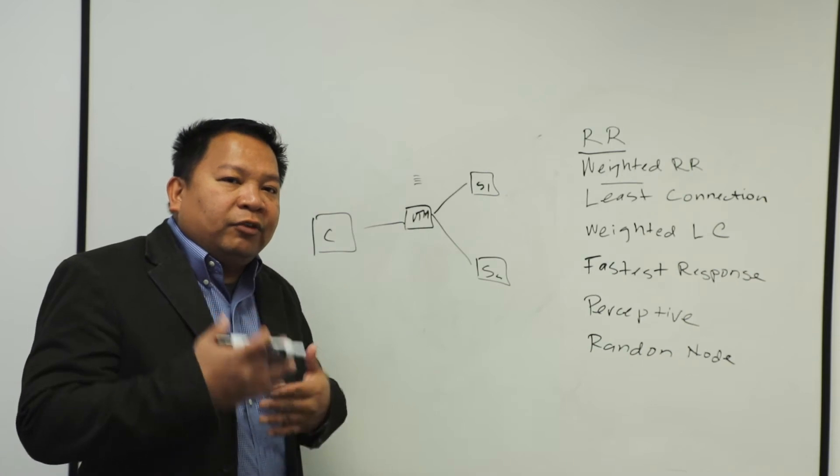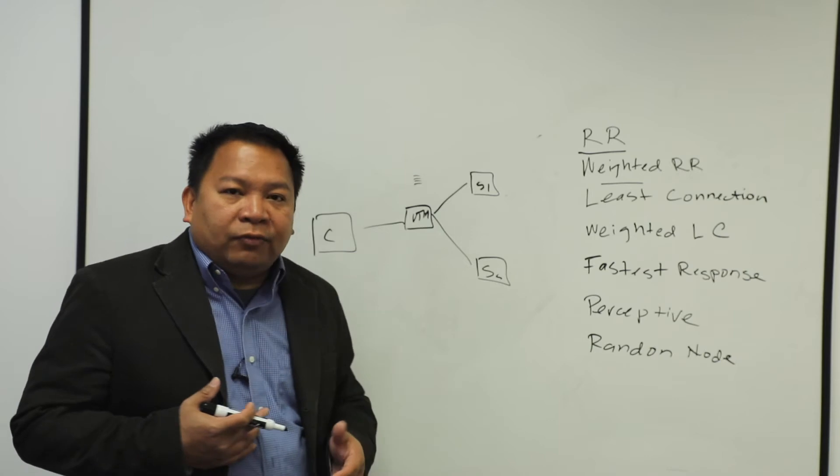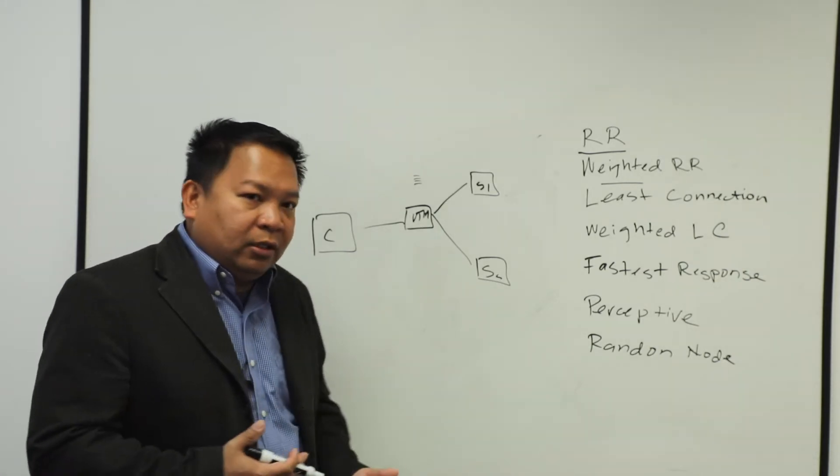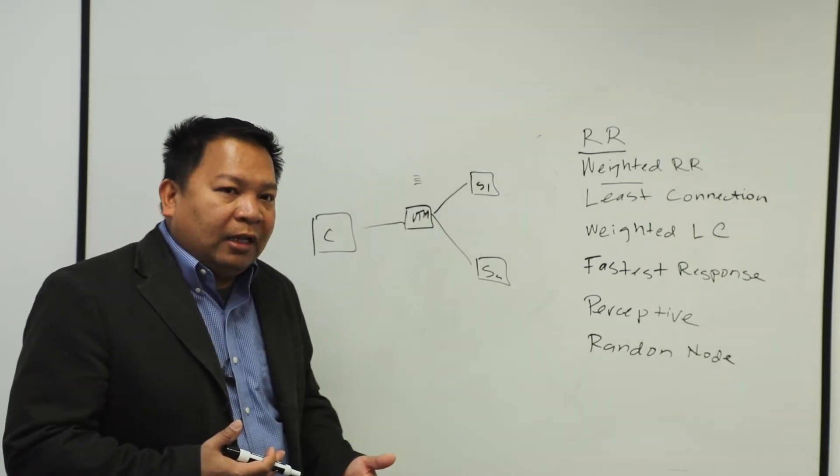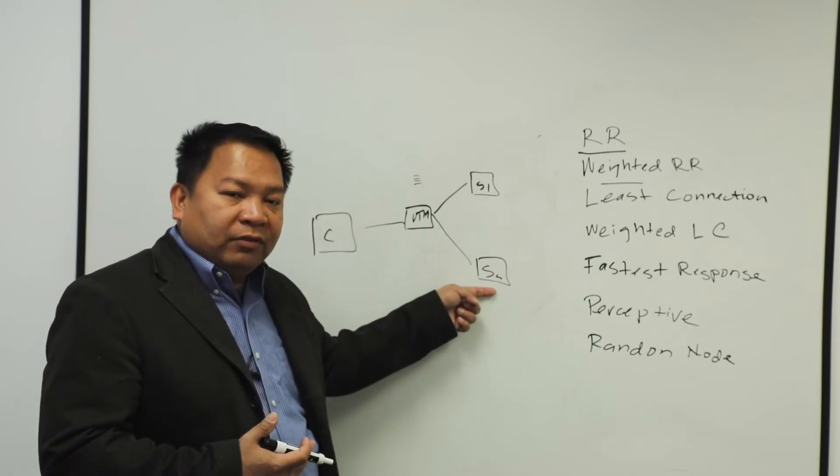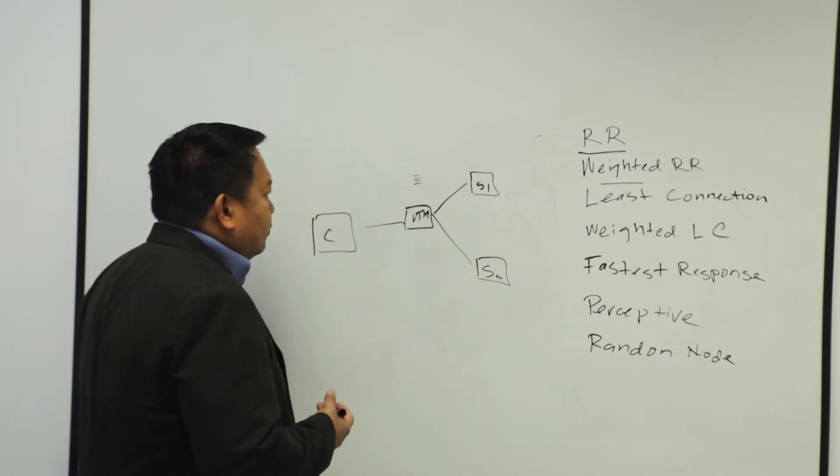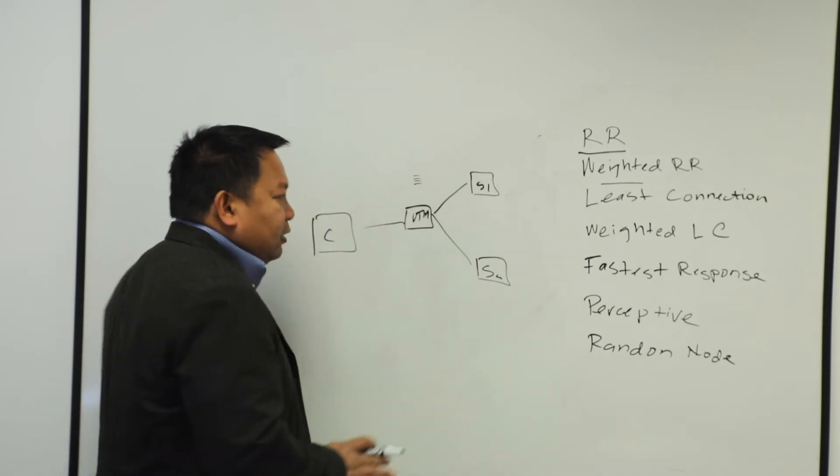Once it figures out, oh, server one only has 10 connections, server two has five connections, which one should I go? The algorithm will pretty much say VTM, I think server two has only five connections, so we'll send the connection to server two. So that's your least connection.